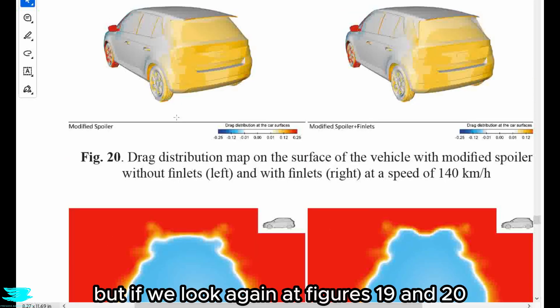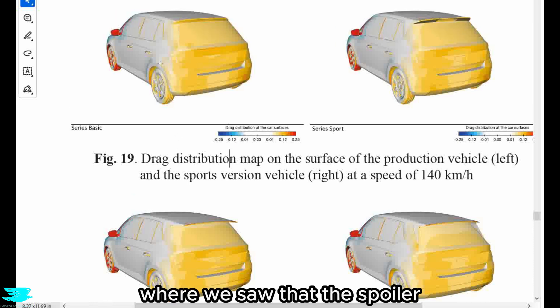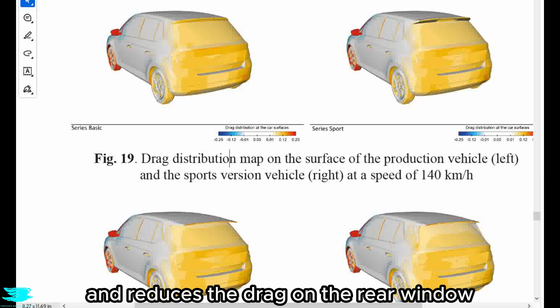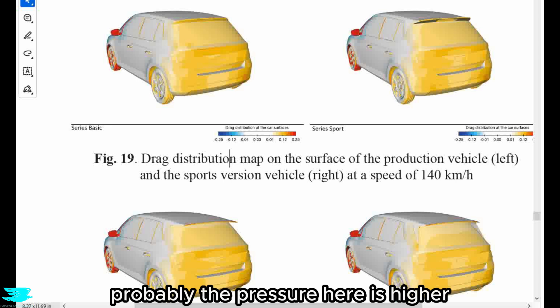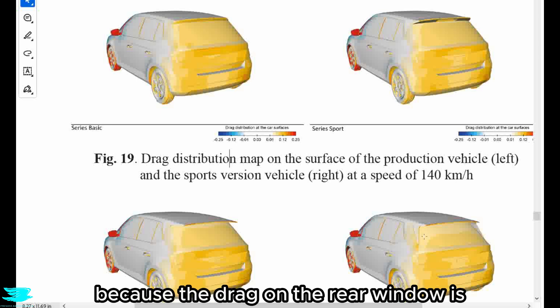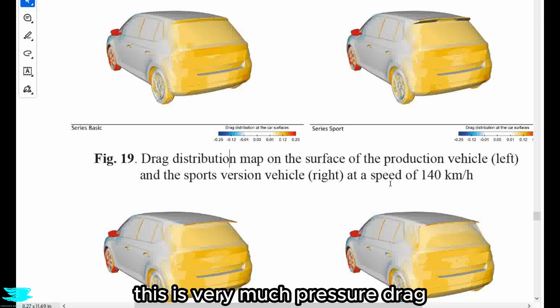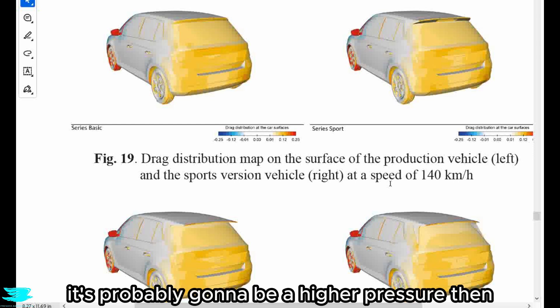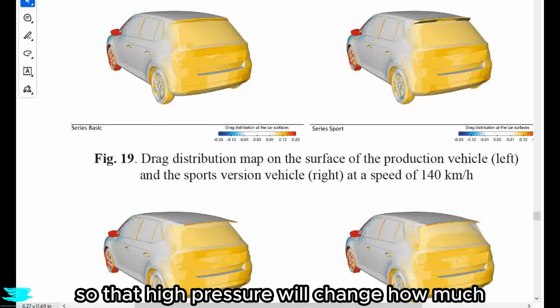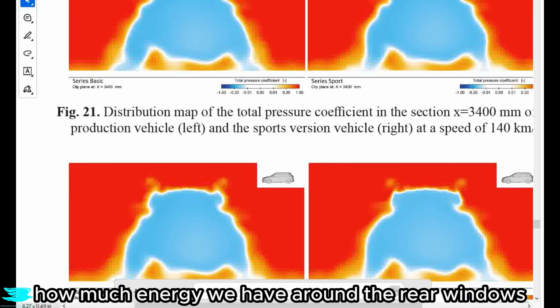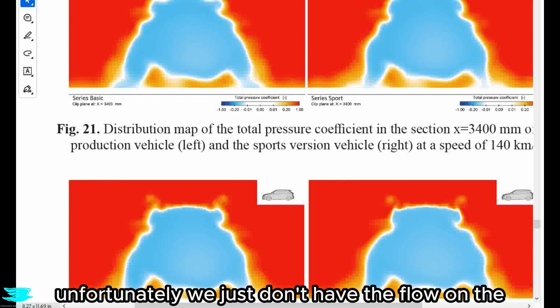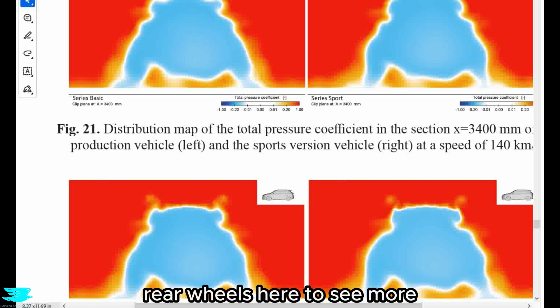And it might seem odd that the spoiler and finlets have such a large effect so low down. But if we look again at figures 19 and 20, where we saw that the spoiler with finlets really does change and reduces the drag on the rear window, we can kind of conclude that probably the pressure here is higher because the drag on the rear window is very much pressure based. This is very much pressure drag. So if we have a lower drag here, it's probably going to be a higher pressure then. So that higher pressure will change how much the flow shoots off from underneath the car. So that could be the case here and changing how much energy we have around the rear wheels. Unfortunately, we just don't have the flow around the rear wheels here to see more. So we can't tell that for sure, but it's probably the reason.